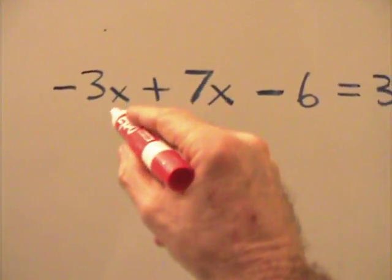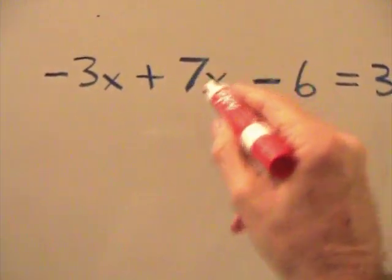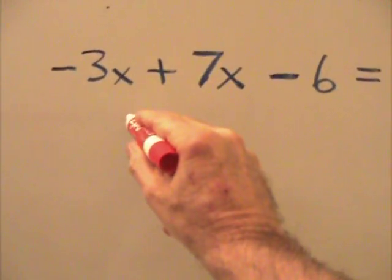We're going to forget about the variable for a second and work out negative 3 plus 7, which gives us 4.